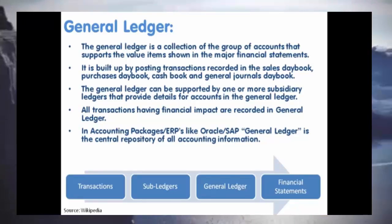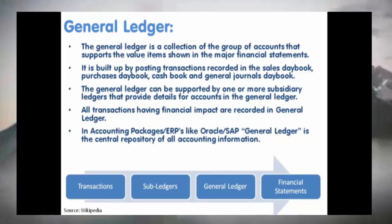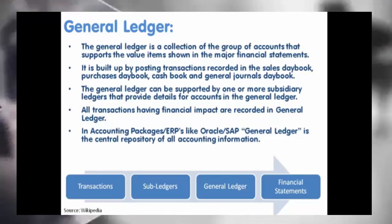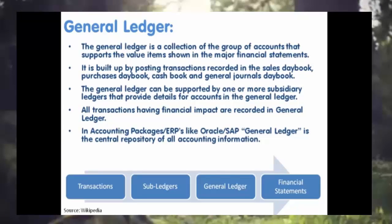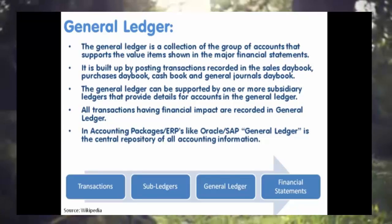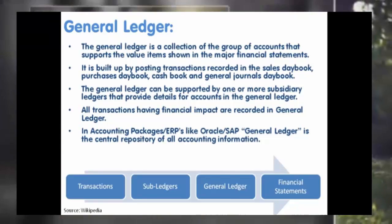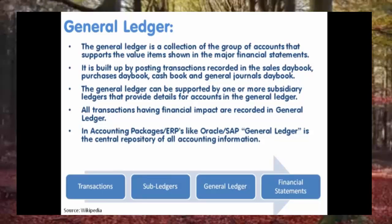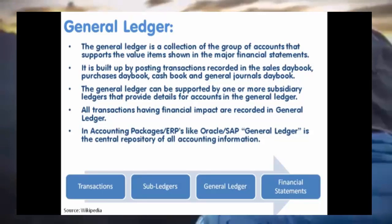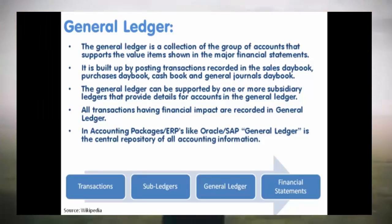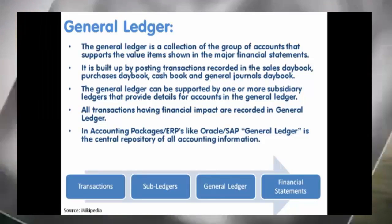General Ledger is built up by posting transactions recorded in various supplemental books, which are known as modules in many accounting packages — like the sales books, purchases books, cash and bank book, and general journals book. For any company that has a large number of transactions, the General Ledger needs to be supported by one or more subsidiary ledgers that provide details for accounts in the General Ledger.